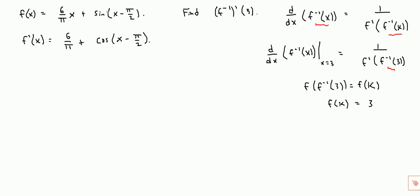f of k, so we can plug in k to f of x, and we'll have 6 over pi times k, plus sine of k minus pi over 2 equals 3. So if we can find k that makes the left hand side equals 3, then that's what f inverse of 3 is.